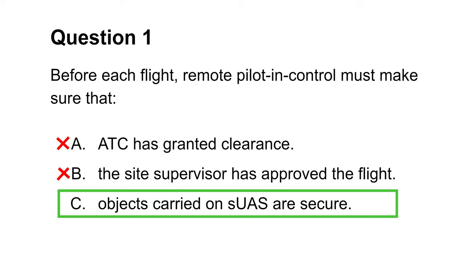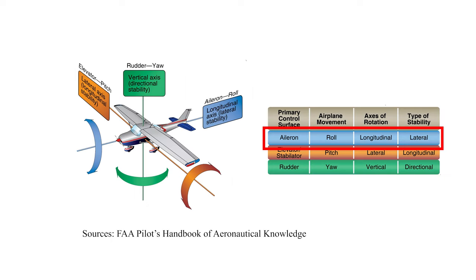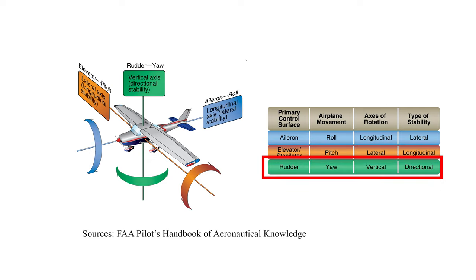The next question wants to know the purpose of a rudder on an aircraft. We can see that choices B and C are incorrect. Recall, aileron controls the airplane's roll or bank. Elevator or stabilator controls pitch. At the same time, rudder controls the aircraft's yawing movement along the vertical axis. This makes choice A the answer.